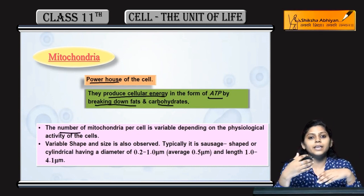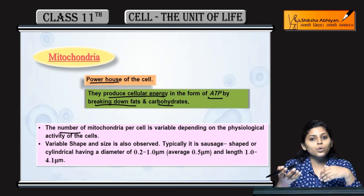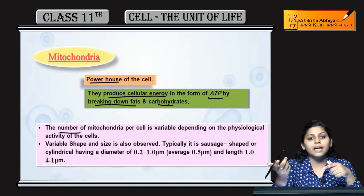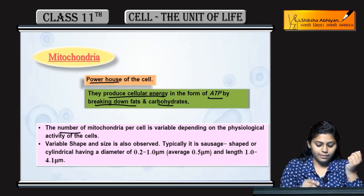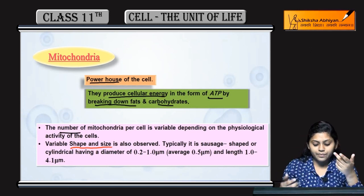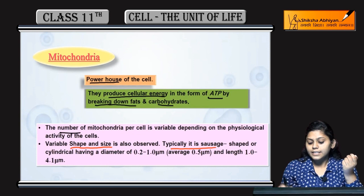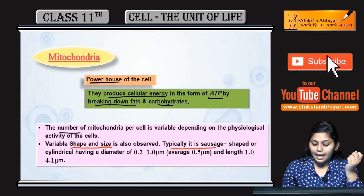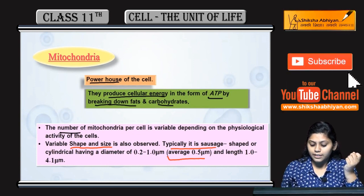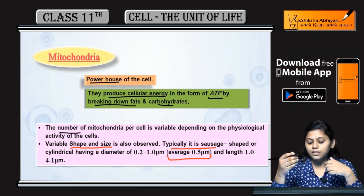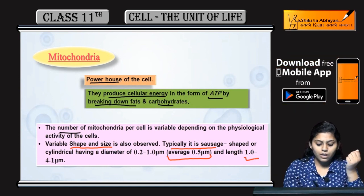Jo mitochondria hota hai, iska number vary karta hai. Means ek cell mein ek mitochondria bhi ho sakti hai, do bhi ho sakti hai, teen bhi ho sakti hai - this number can vary. Variable shape and size hota hai.